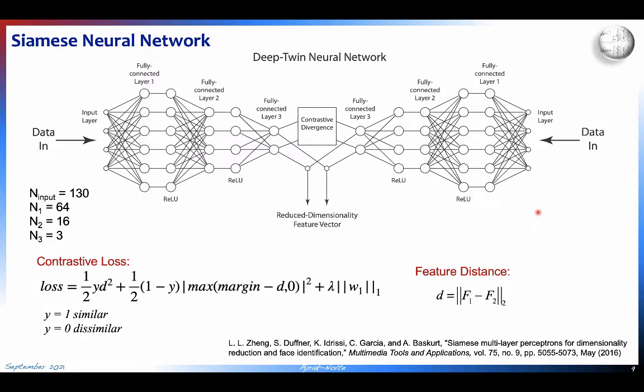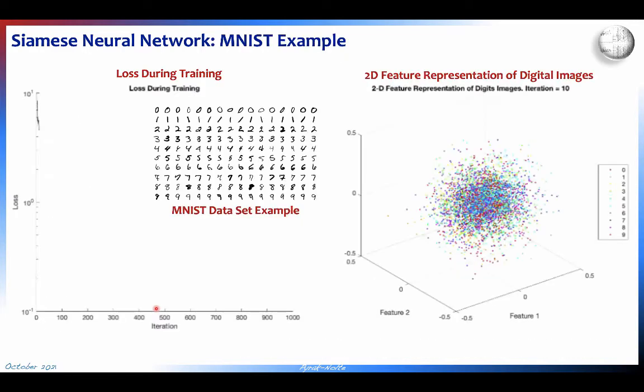We're going to use a Siamese neural network to characterize the uncontrolled source. Instead of using the active source — which is a very repeatable signal — the uncontrolled sources have highly varying signals: amplitudes are changing, frequency content is changing, and there's no direct trigger for these events. So we'll use a Siamese neural network to look for differential signatures related to changes in saturation.